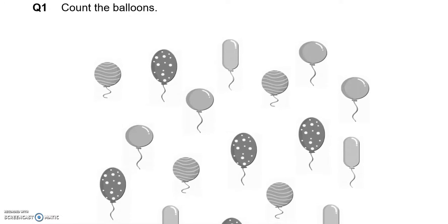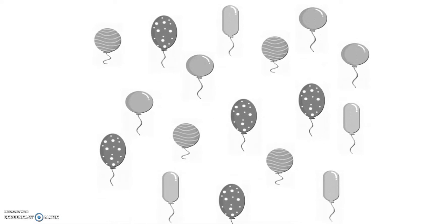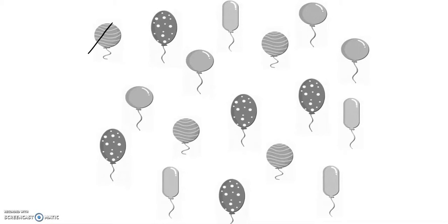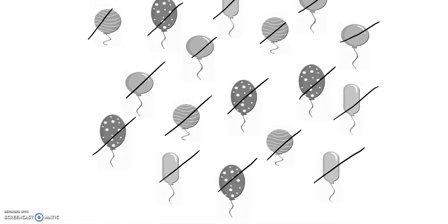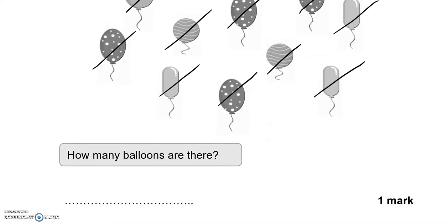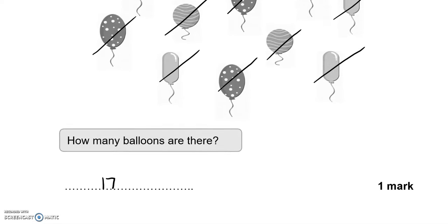We've got to count the balloons: 1, 2, 3, 4, 5, 6, 7, 8, 9, 10, 11, 12, 13, 14, 15, 16, 17. So how many balloons are there? 17.